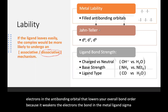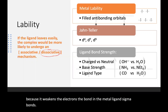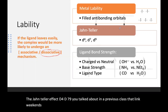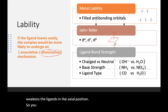The Jahn-Teller effect — seen in D4, D7, and D9 complexes, as discussed in a previous class — weakens the ligands in the axial position, making those ligands much more likely to leave.